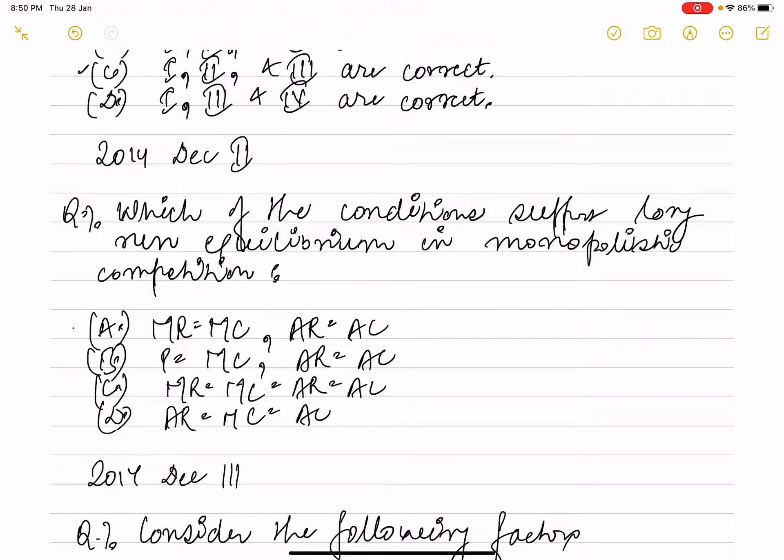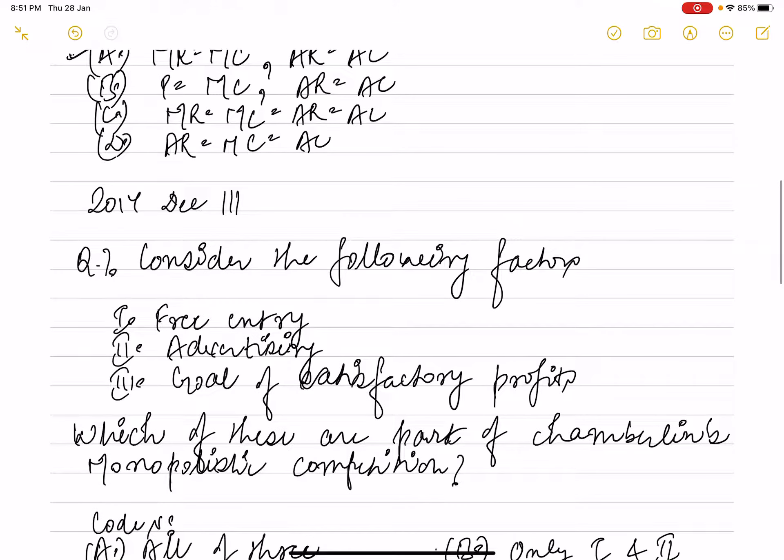Next question. This was asked in 2014 December paper two. The question is: which of the following conditions support long run equilibrium in monopolistic competition? Is it MR equals MC, or AR equals AC, or price equals MC, or AR equal to AC? Option C says MR equals MC and AR equals AC. Option D says AR equals MC equals AC.